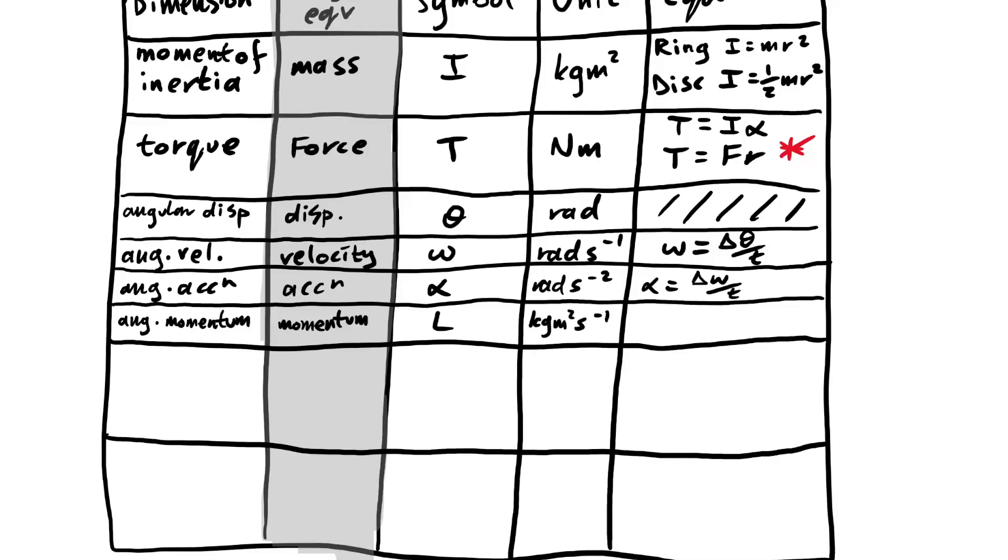Angular momentum, given the symbol capital L, its unit is kilogram meter squared per second. Normal momentum is mass times velocity. So in this case, it's going to be moment of inertia times angular velocity.